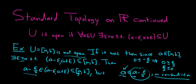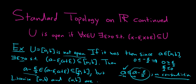You can do the same thing with b. So likewise, the sets (a, b] and [a, b) are also not open in this topology. They are not open sets in this topology.